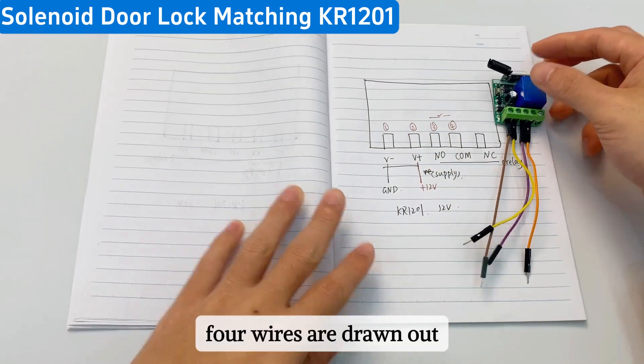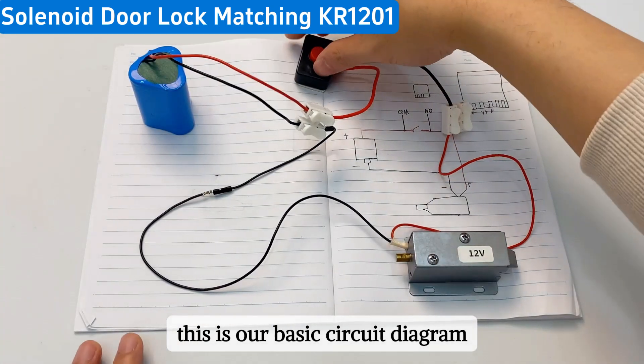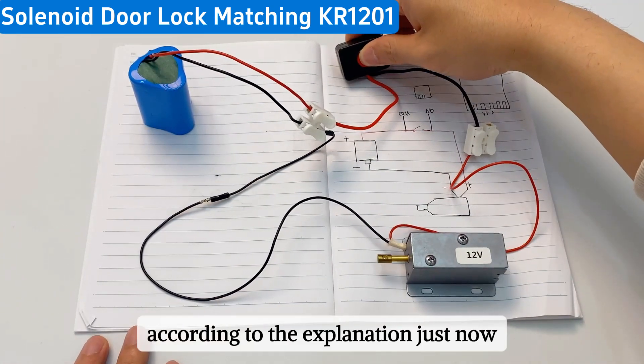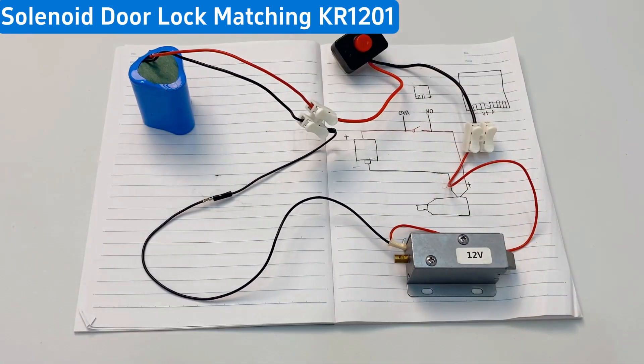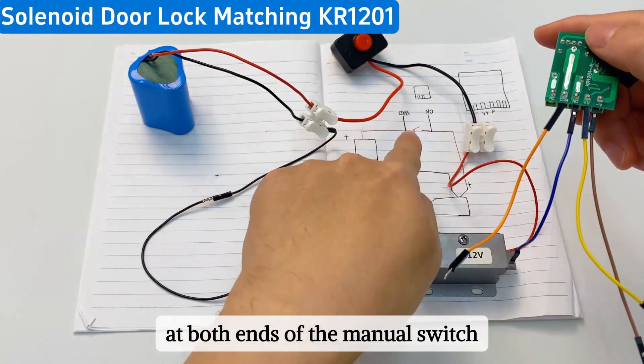Four wires are drawn out. This is our basic circuit diagram. According to the explanation just now, we connect the com and NO ends at both ends of the manual switch.